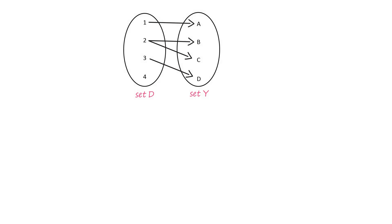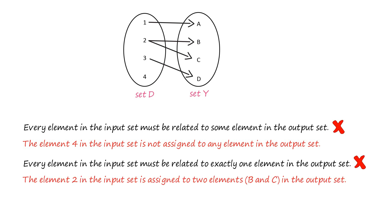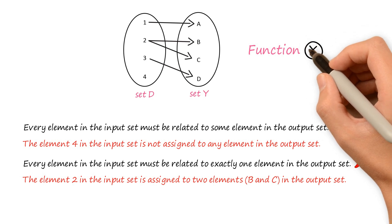Now consider the sets D and Y related to each other as shown. Can we consider this relation as a function? Pause this video and give it a thought. Clearly, the element 4 in the input set is not assigned to any element in the output set. Also, the element 2 in the input set is assigned to two elements, b and c, in the output set. So the given relation is not a function.